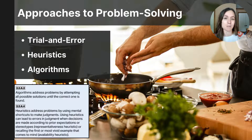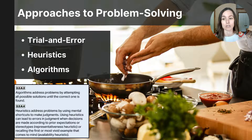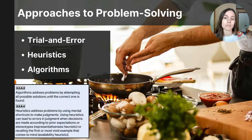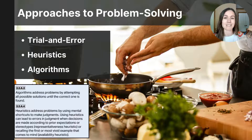Finally, the last method of problem solving is an algorithm. Algorithms involve following a set of step-by-step logical instructions or an outlined set of procedures to achieve a specific outcome. For example, you might follow a recipe precisely when preparing a meal. The advantage of algorithms is that they produce precise and accurate solutions, ensuring a reliable and consistent outcome. However, they can be time consuming and complicated, requiring careful attention to instructions and the necessary resources.